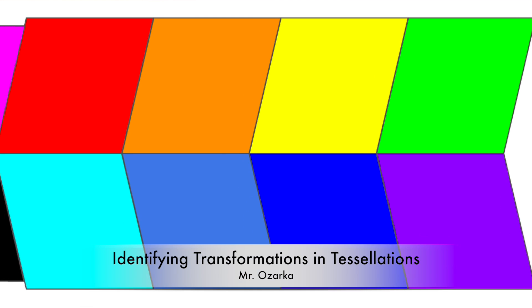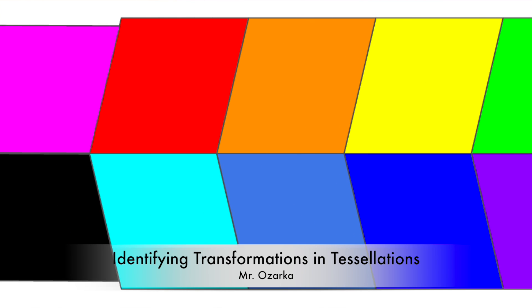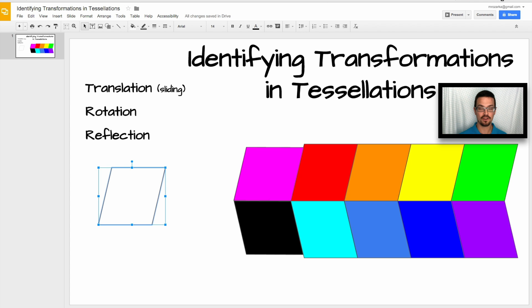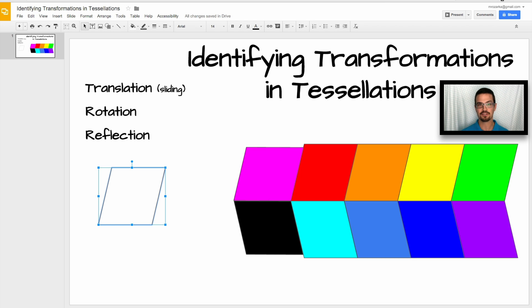This is going to be a video about identifying transformations and tessellations that are already made. Our already made tessellation is going to be this colorful tessellation that I have right here. I purposely kept it really simple just so this video is easier to understand, but just know that you can make this tessellation as simple or as complicated as you want. Definitely experiment with this and try to do one to your needs.